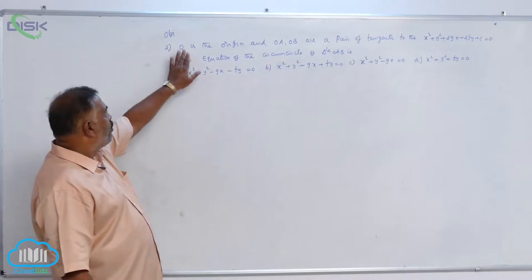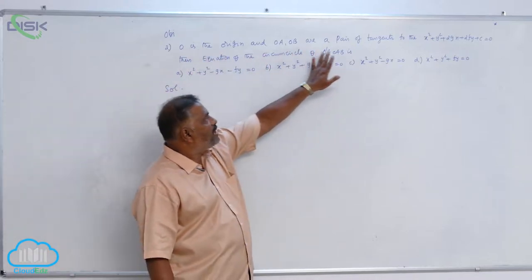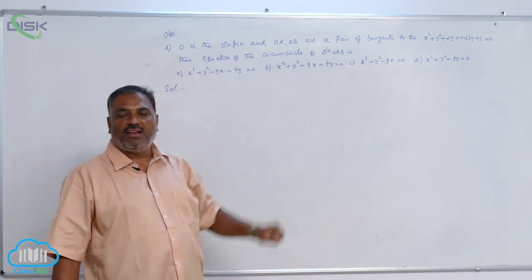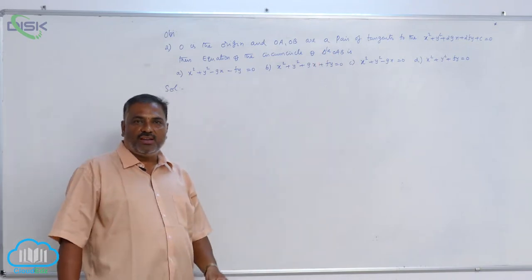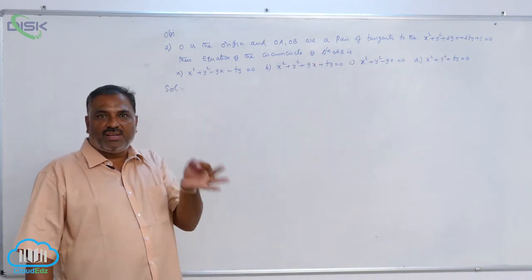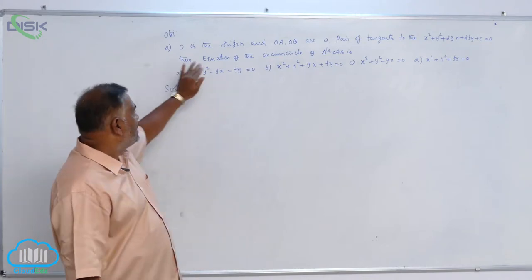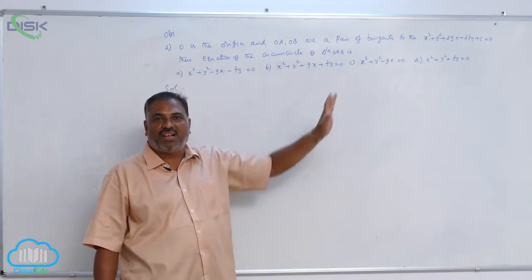I will discuss one more problem. O is the origin, OA comma OB are pair of tangents to the circle x square plus y square plus 2Gx plus 2Fy plus C is equal to 0. Then equation of circumcircle of triangle OAB.